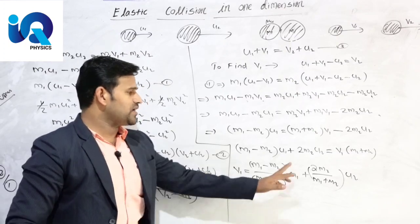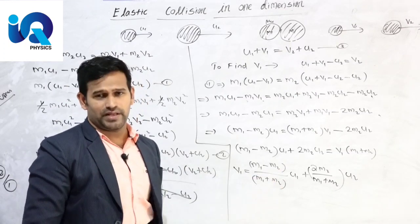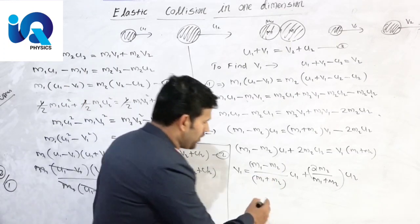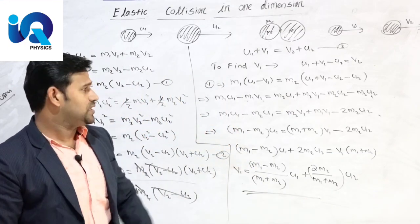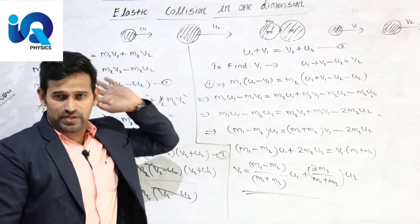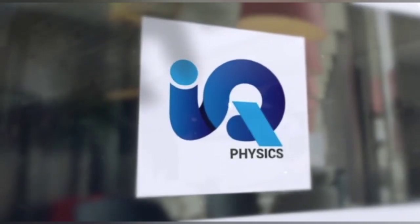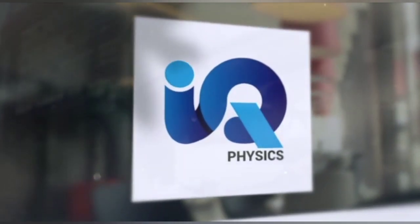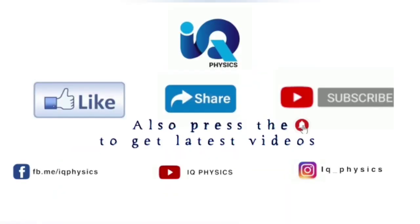This is the V1 equation. Similarly, V2 equal to 2M1 over M1 plus M2 into U1 plus M2 minus M1 over M1 plus M2 into U2.